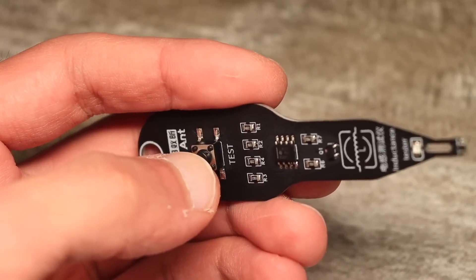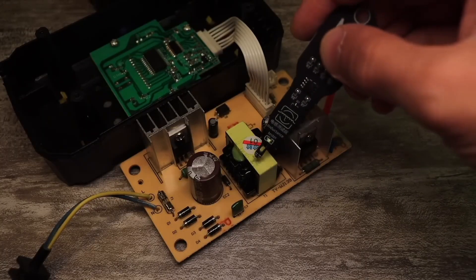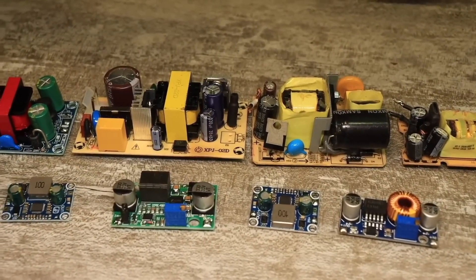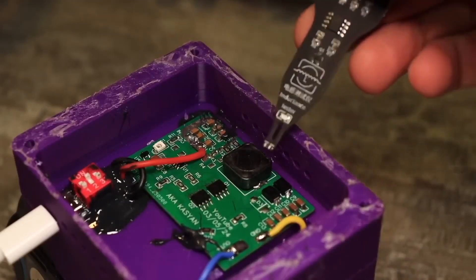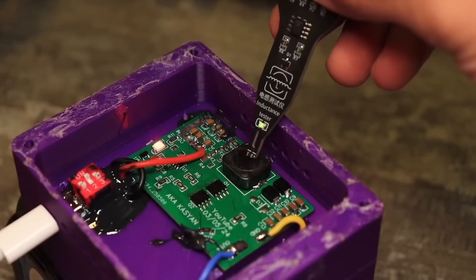To operate the tester, you need to press and hold the button. With this tester, you can quickly check the operation of switching power supplies, secondary power circuits on different boards, DC-DC converters, chargers, and so on. At the same time, the latter must definitely be operating, and there must be a load connected to their output.